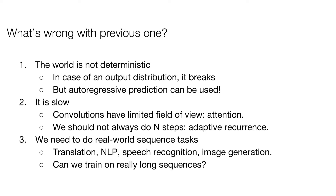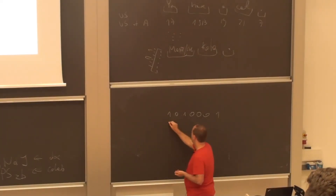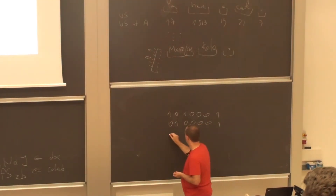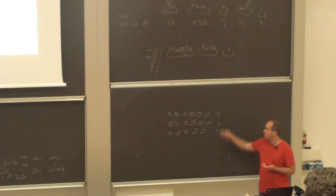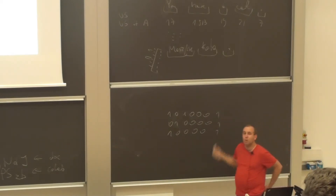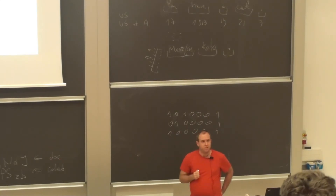I'll show you how to solve it with autoregressive prediction in a moment. The second problem is that the neural GPU is slow. So let's start with the autoregressive thing. Imagine we need to generate a distribution over sequences — let's get back to sequences of bits.